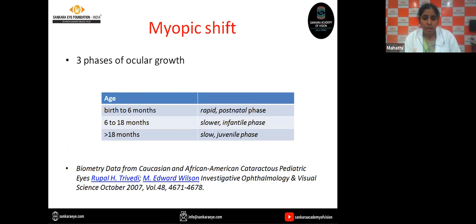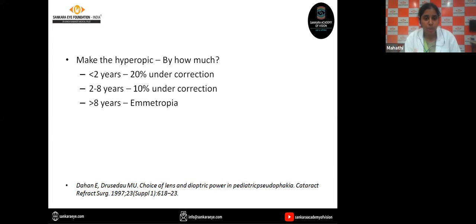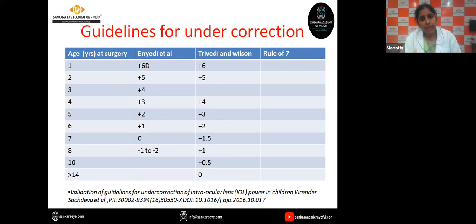There are three phases of ocular growth according to Trivedi et al.: birth to six months is the rapid postnatal phase; six to 18 months is the slower infantile phase; and after 18 months is the slower juvenile phase. So how do we overcome myopic shift? We make the eye hyperopic by leaving an intentional under-correction. Dahan et al. gave the criteria: less than two years of age, 20% under-correction; two to eight years, 10% under-correction; and more than eight years, target emmetropia. Naeser et al. and Trivedi et al. also gave guidelines for under-correction in which they almost followed the rule of seven — that is, age plus the hyperopia target equals seven. Gorindu Sachdev et al. did a study in 2016 where they studied eyes of children operated under seven years of age, followed for seven years, and validated all these guidelines for use of hyperopia.